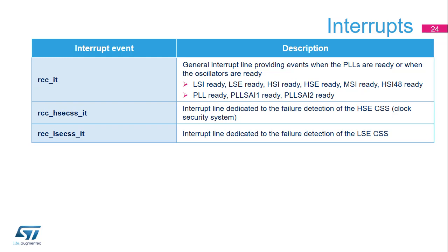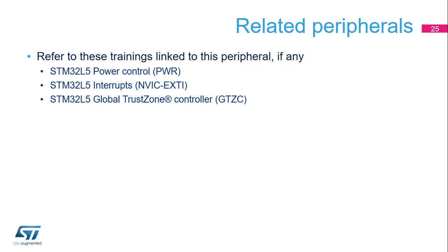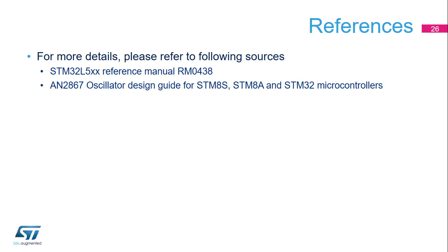This slide lists the RCC interrupts. The LSE and HSE clock security systems can generate an interrupt request. RCCIT typically reports PLL-ready and oscillator-ready events. In addition to this training, you may find the Power Control, Interrupt Controller, and Global TrustZone Controller trainings useful. For more details, please refer to application note AN2867, an oscillator design guide for STM8S, STM8A, and STM32 microcontrollers.